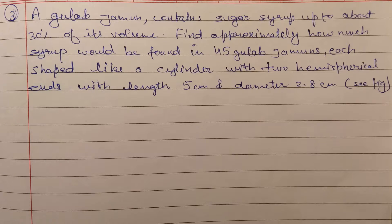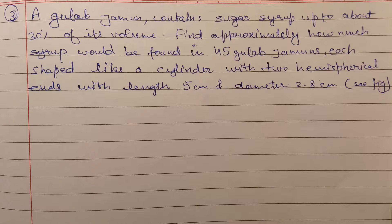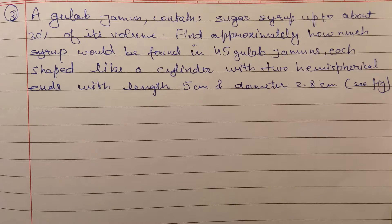A gulab jamun contains a sugar syrup up to about 30% of its volume. Find approximately how much syrup would be found in 45 gulab jamuns, each shaped like a cylinder with two hemispherical ends, with length 5 cm and diameter 2.8 cm. The given information is that one gulab jamun में 30% sugar syrup contained है।